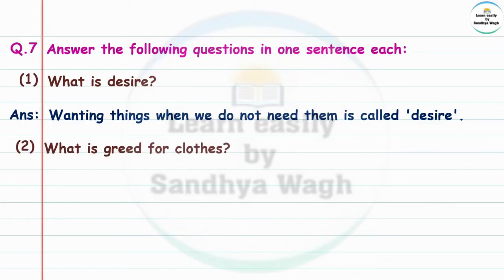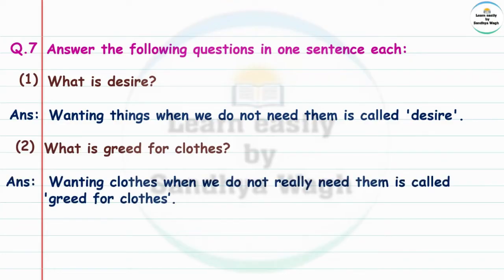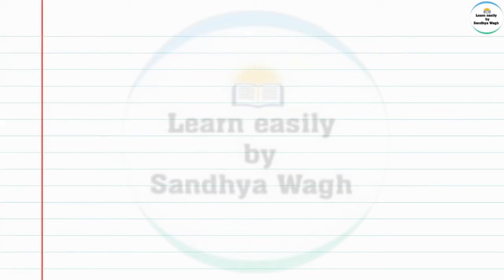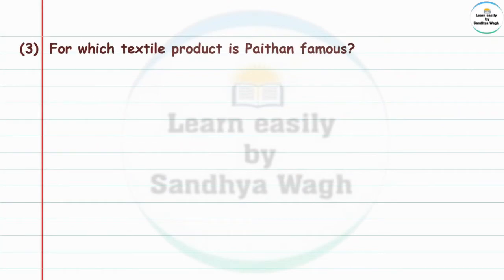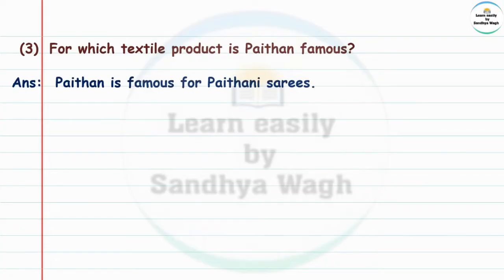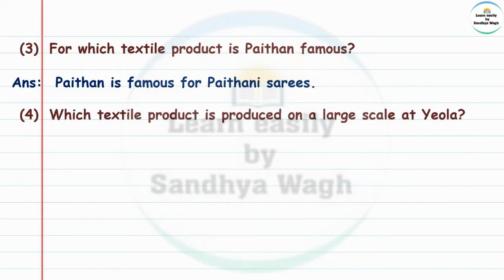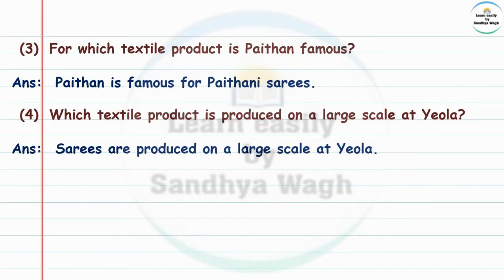What is greed for clothes? Answer: Wanting clothes when we do not really need them is called greed for clothes. For which textile product is Paithan famous? Answer: Paithan is famous for Paithani sarees. Which textile product is produced on a large scale at Yevla? Answer: Saris are produced on a large scale at Yevla.